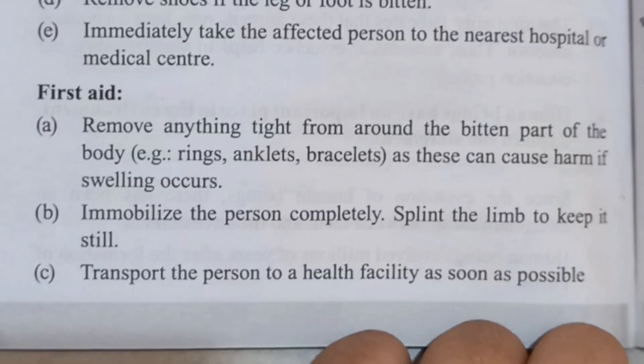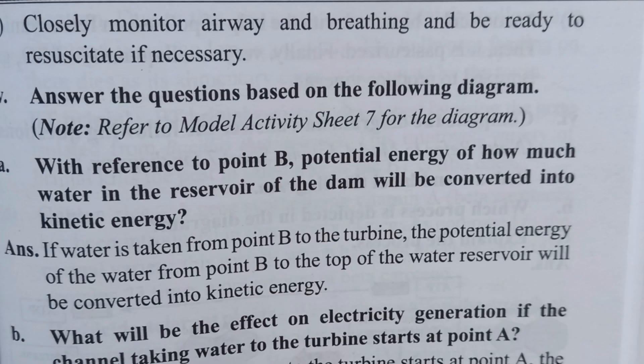As first steps, remove anything tied around the bitten part of the body — such as rings or bracelets — as these can cause harm if swelling occurs. Immobilize the person completely; splint the limb to keep it still. Transport the person to a health facility as soon as possible. Closely monitor airway and breathing and be ready to resuscitate if necessary.